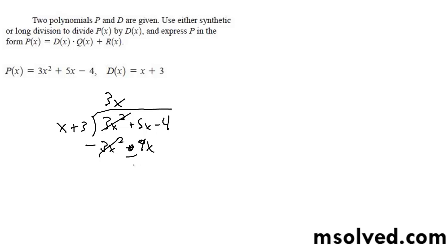This cancels out and we're left with negative 4x and then minus 4. So what we have here is x goes into negative 4x minus 4 times.